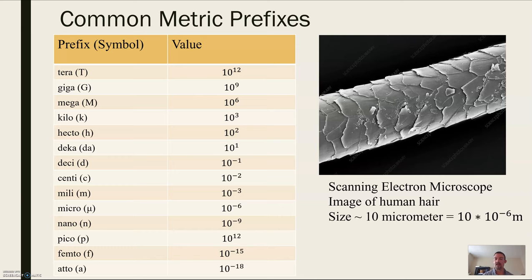And then it keeps going down. So the example I have here is this image of a human hair. So if you take a hair out of your head, if you look at the width, the width of the hair is about 10 micrometers or 10 times 10 to the minus 6 meters. So it's a pretty small width. And so these prefixes are things you might see in the wording of problems. So it's just another way to write out a numerical value.